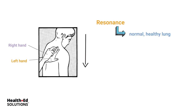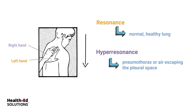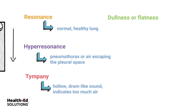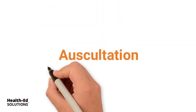Resonance is a normal finding — a nice resonant sound when you tap on a healthy lung. Hyper-resonance is a sign that there is way too much air, such as a pneumothorax. Tympani is also another sound you might hear; it's normal over the belly but over the lungs indicates too much air. If you hear dullness or flatness, that's an indicator of fluid, because fluid is not a good producer of sound when you percuss.